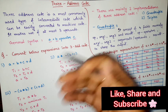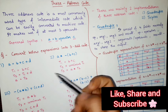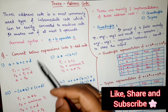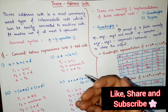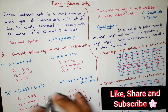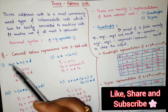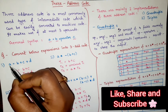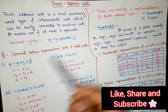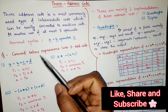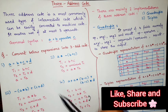A frequently asked question in university exams and competitive exams is converting expressions into 3 address code — they give an expression that is not in 3 address code and expect you to convert it. Let's see how, with an example: A = B + C + D. This expression is not in 3 address code because it has 4 operands — A, B, C, D — but 3 address code allows a maximum of 3. So we need to convert it.